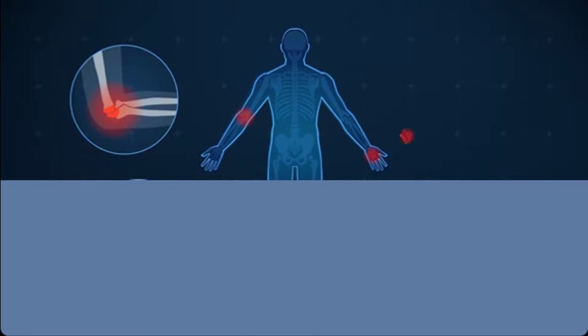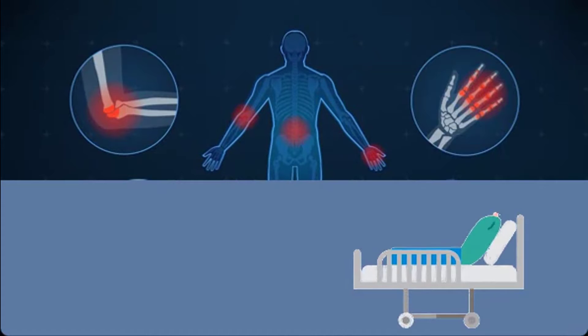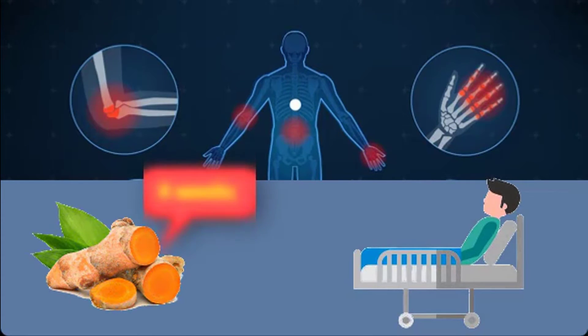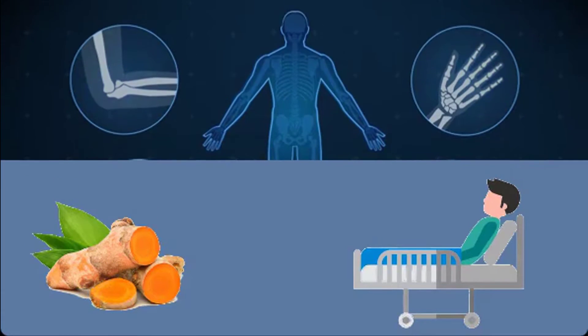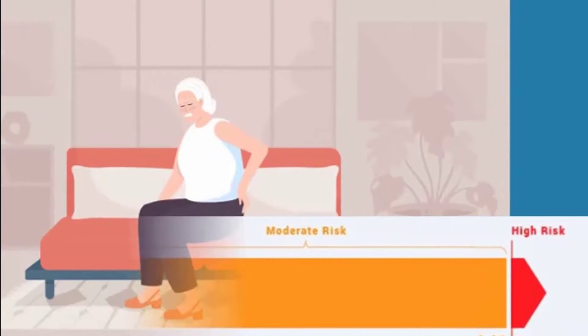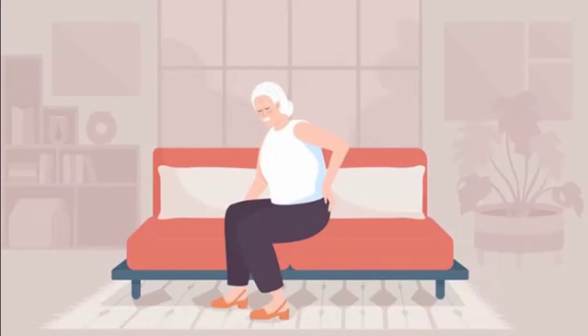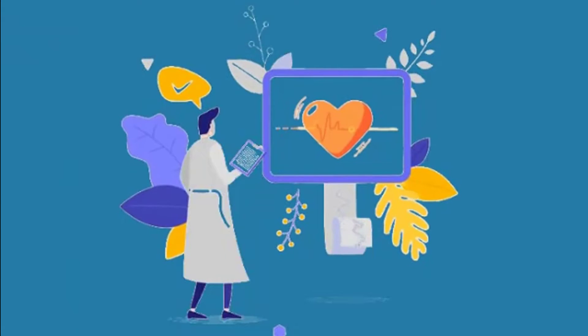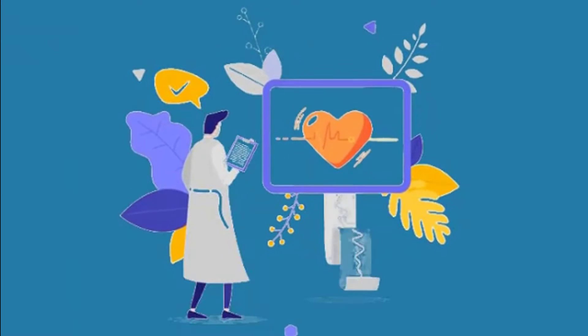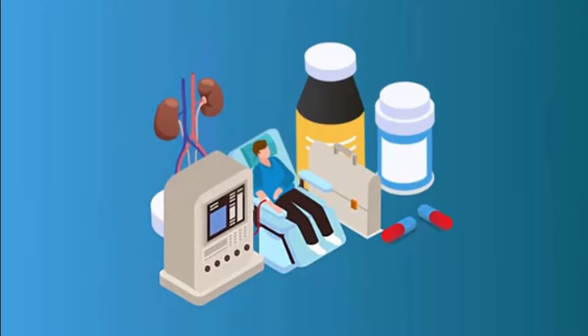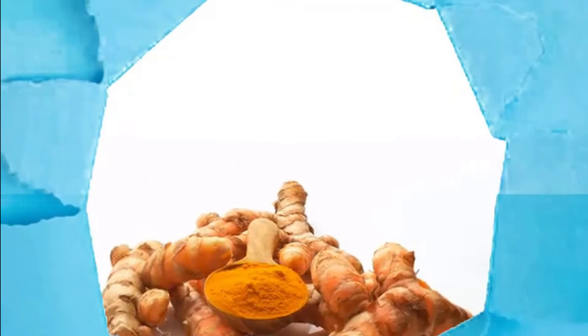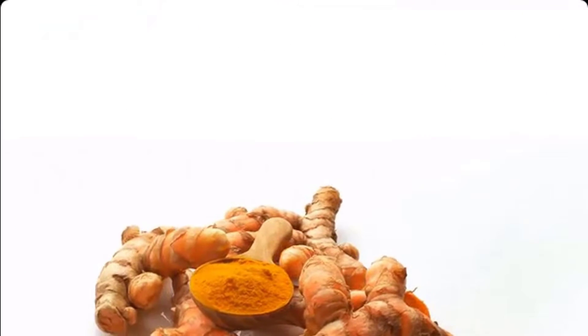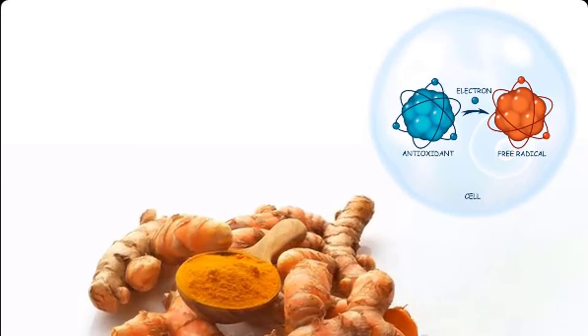Turmeric inhibits inflammatory processes. One study found that patients who took curcumin for more than four weeks experienced falling CRP levels. A high CRP value indicates chronic inflammatory processes in the body and is considered a harbinger and risk factor for cardiovascular diseases and many other chronic diseases.